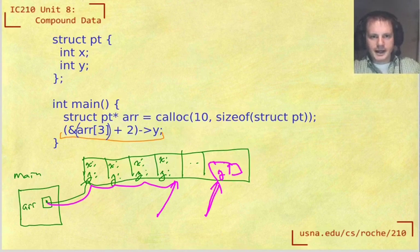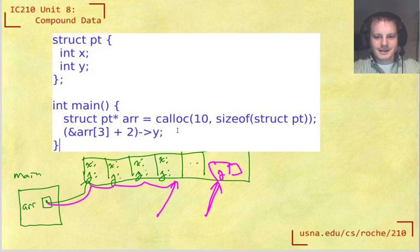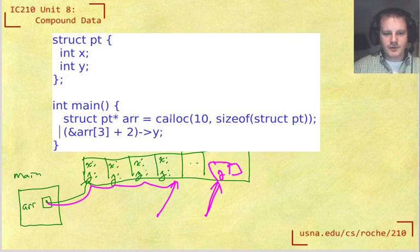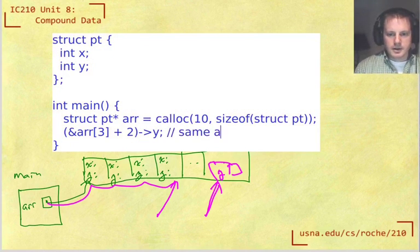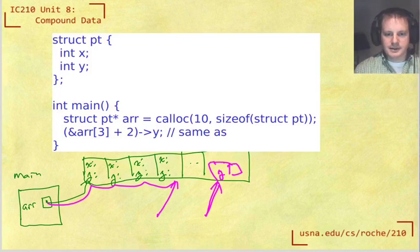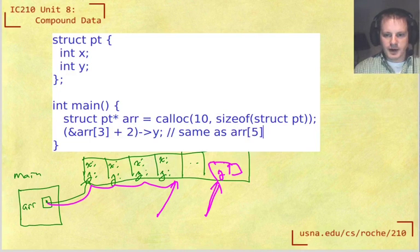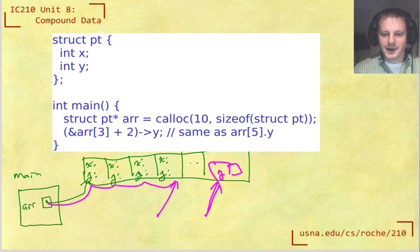So we ultimately end up, this whole weird looking expression is the same as if we wrote, it's really just the fifth index in the array and the y element. So array index five dot y. It's a much more complicated way of writing array index five dot y.